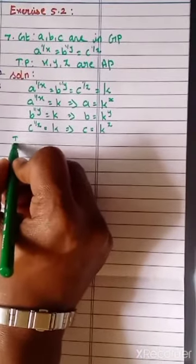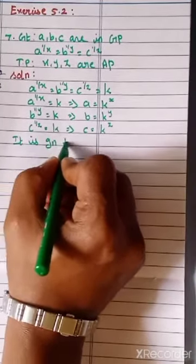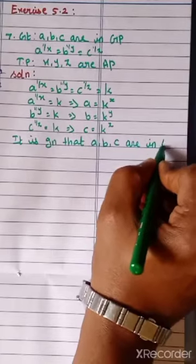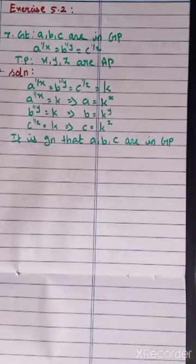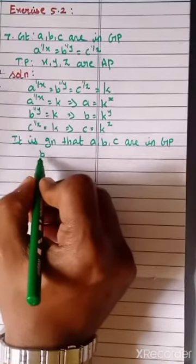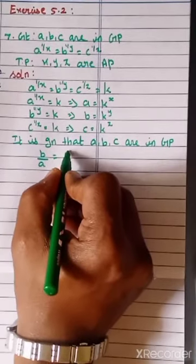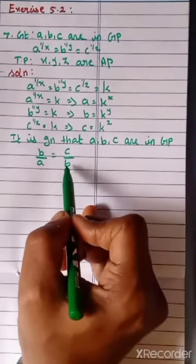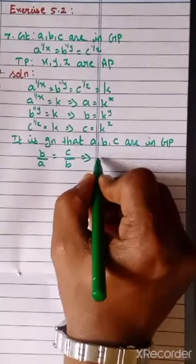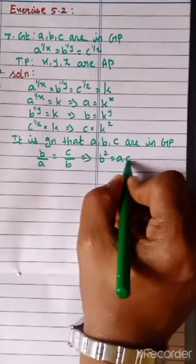Now we got the values of A, B, C. It is given that A, B, C are in GP. What is the GP condition? Second term divided by first term equals third term divided by second term. Taking B to that side and A to the right-hand side, we can write this as B squared equals A times C.